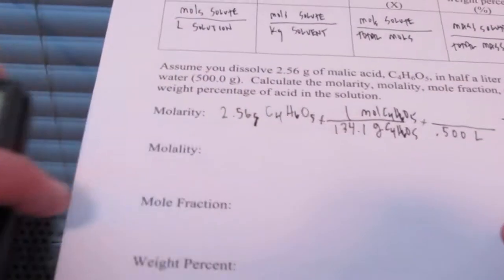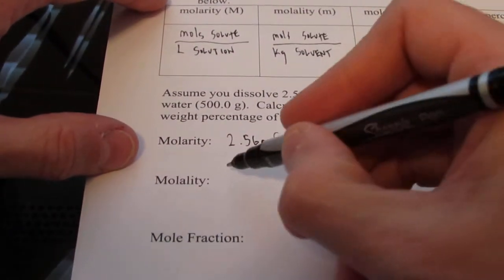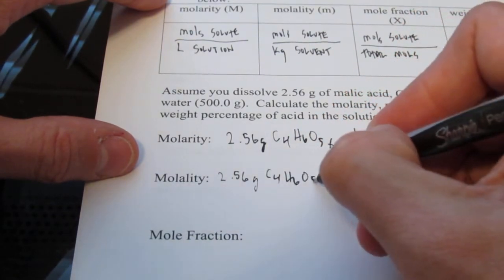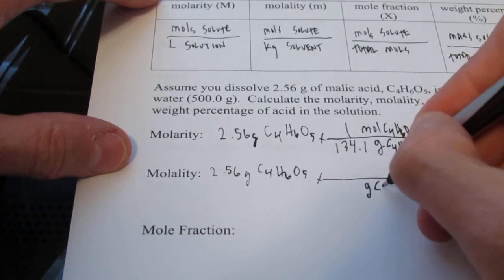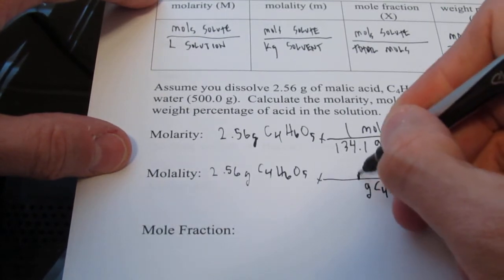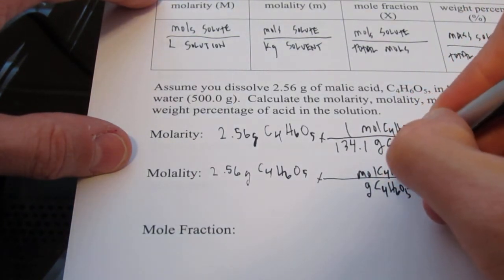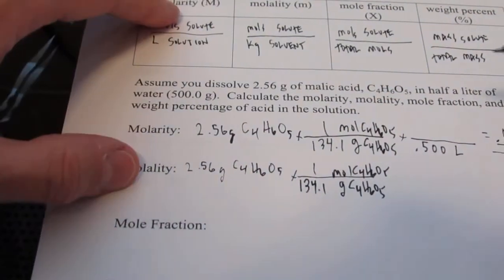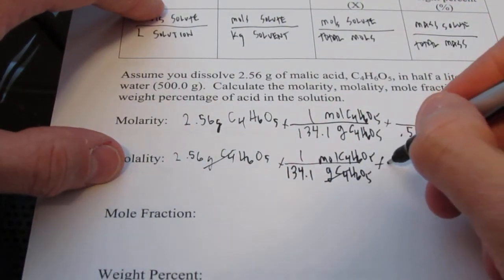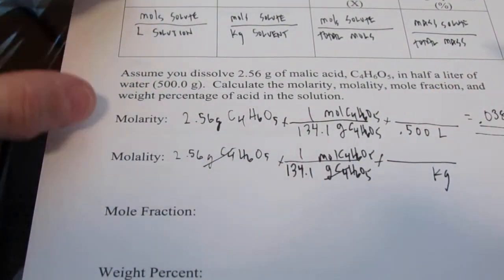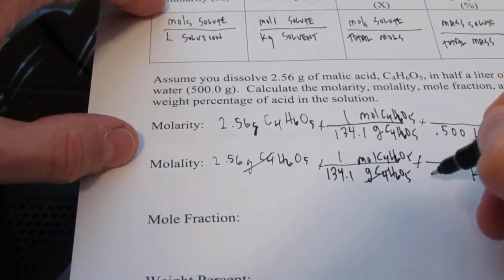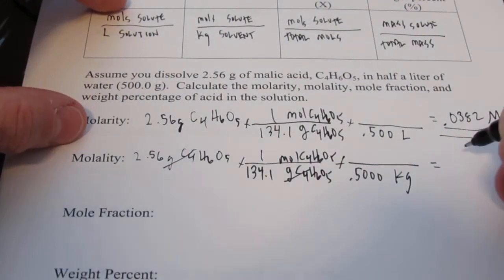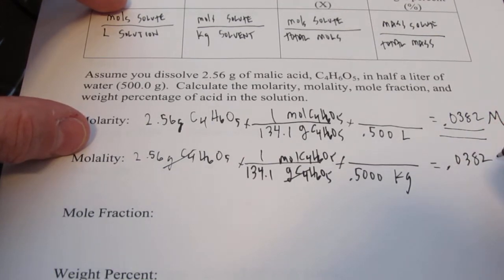Now molality is similar. Remember the numerator is the same. Moles of solute. So we're going to start out the same way. 2.56 grams of C4H6O5. And we'll go from grams of C4H6O5 to moles of C4H6O5. And we already know the molecular mass is 134.1 grams per mole. So grams of my solute are gone. And we'll divide that by kilograms of my water. So I have 500 grams of water. Which of course is 0.50000 kilograms. And you'll notice the math in this particular case turns out to be the same.